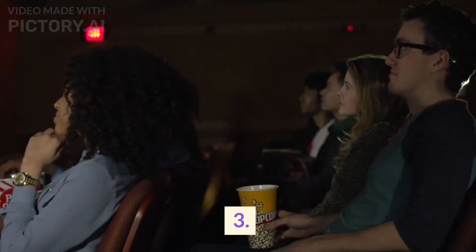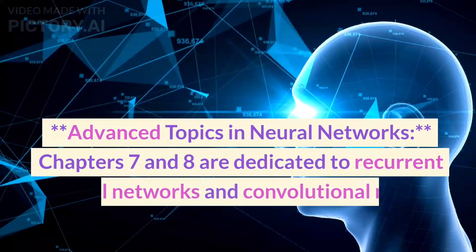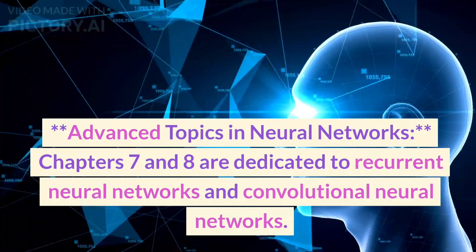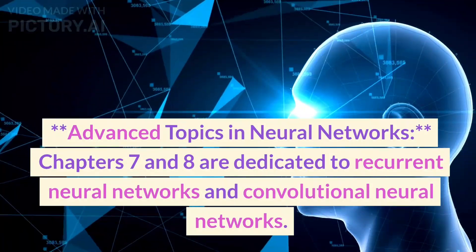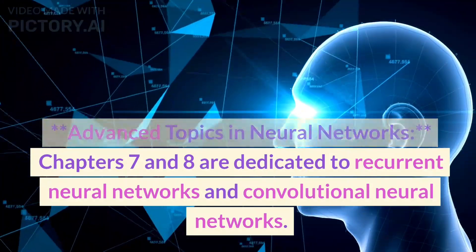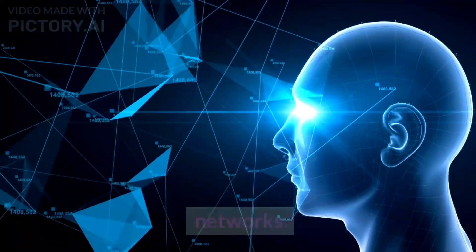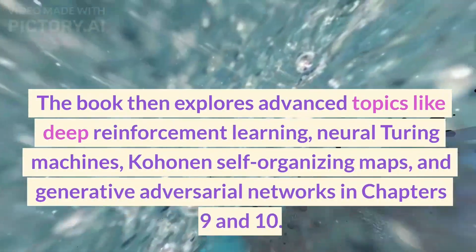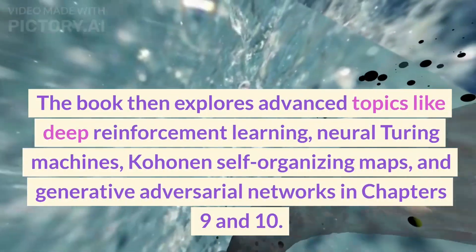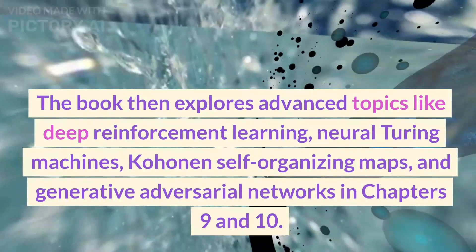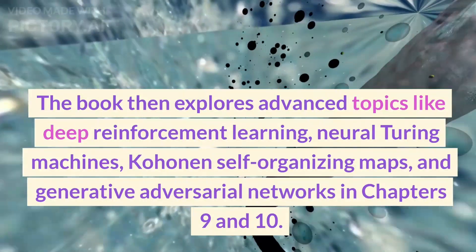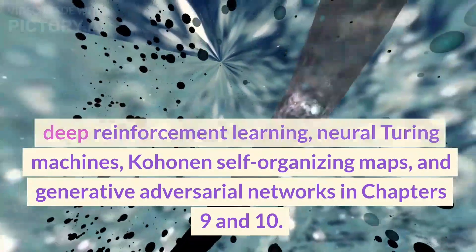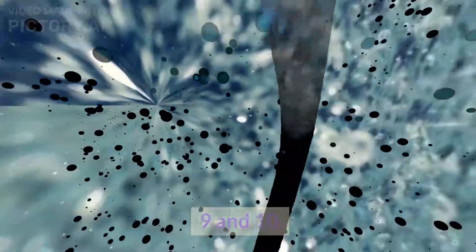Chapters 7 and 8 are dedicated to recurrent neural networks and convolutional neural networks. The book then explores advanced topics like deep reinforcement learning, neural Turing machines, Kohonen and self-organizing maps, and generative adversarial networks in Chapters 9 and 10.